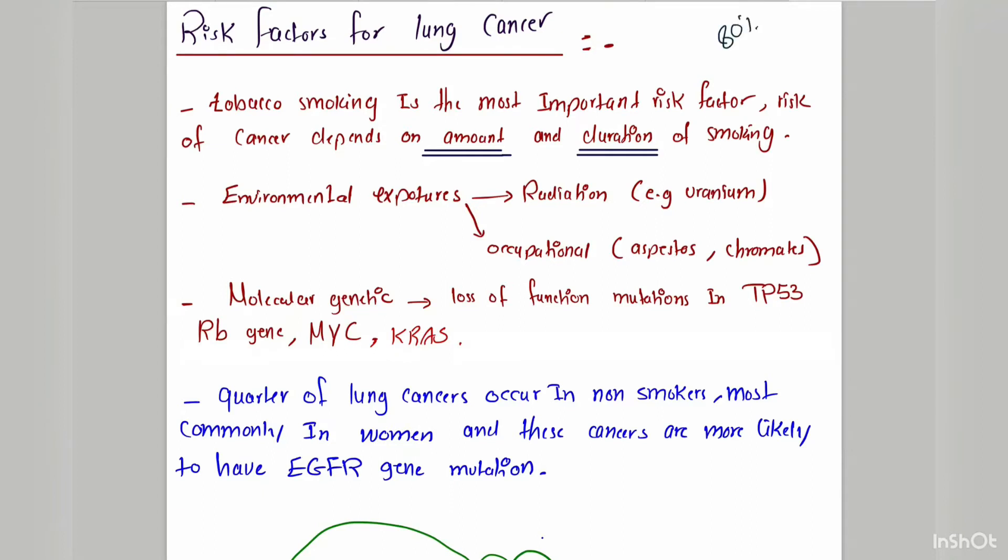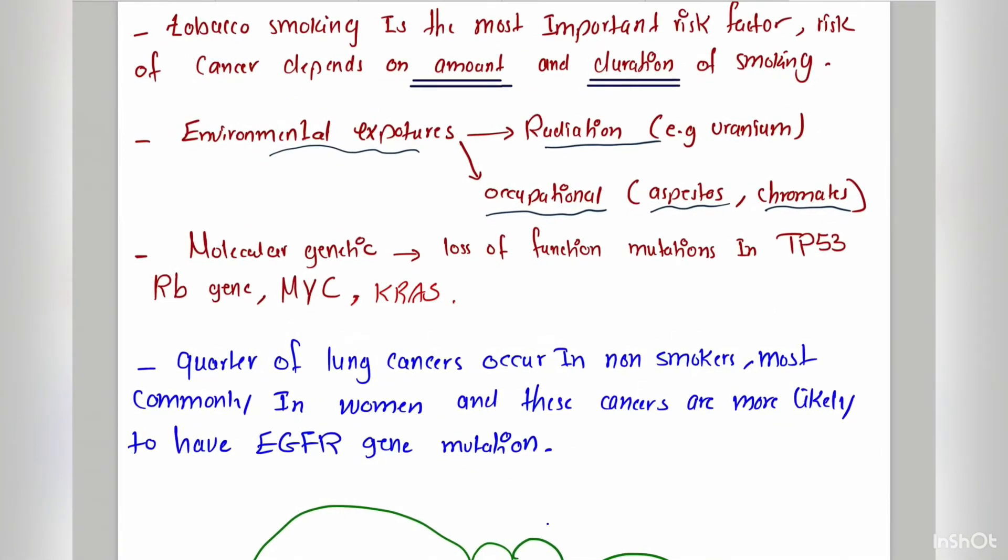Other risk factors include environmental exposures such as radiation, or occupational exposures such as asbestos or chromates. Other risk factors include molecular genetic abnormalities in tumor suppressor genes such as TP53 or RB gene, or abnormalities in oncogenes such as KRAS gene.